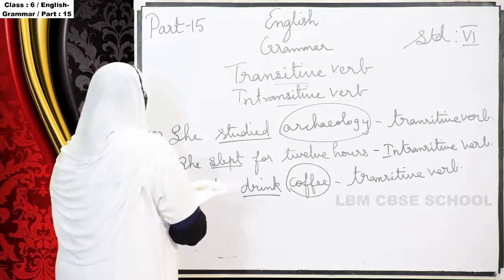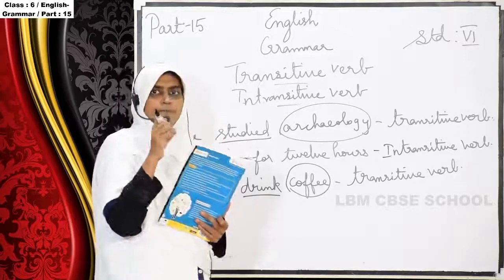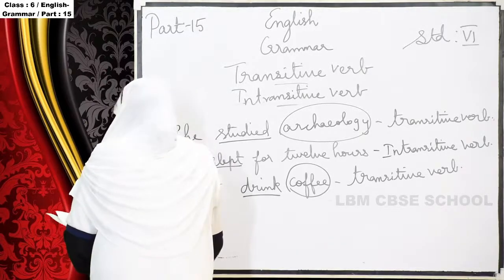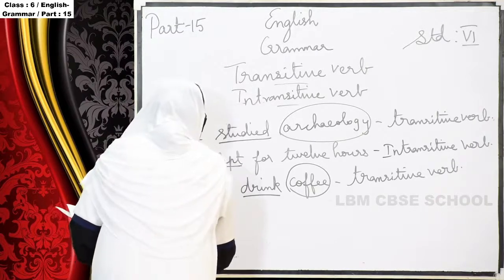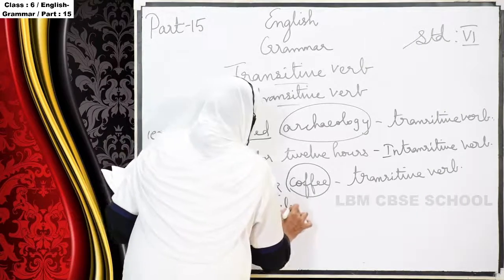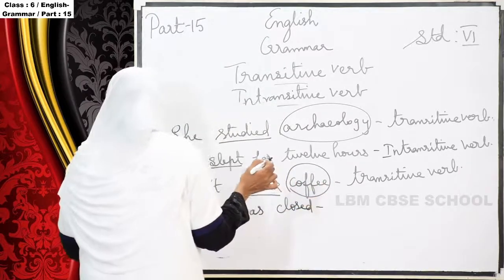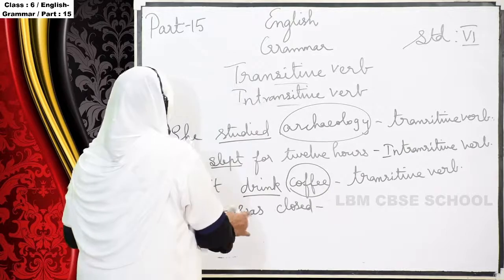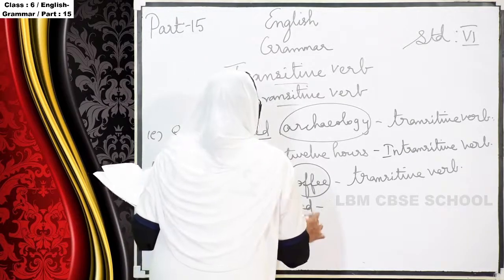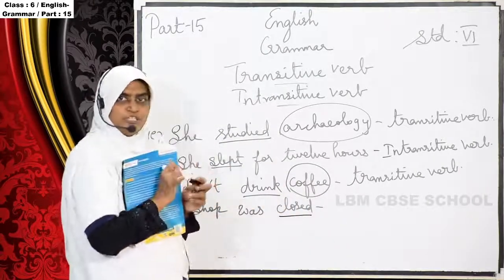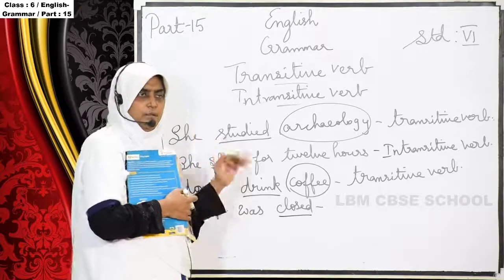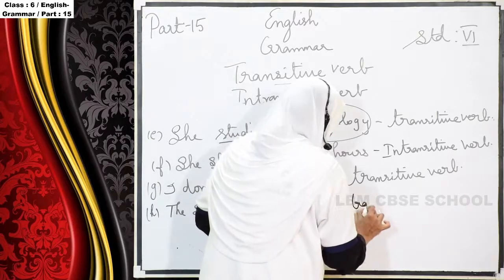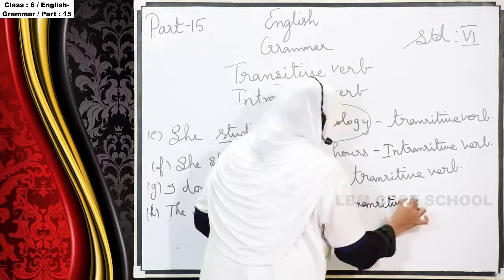One more intransitive verb — H. 'The shop was closed.' Here 'closed' is the verb, but it doesn't take the object. It gives a statement but is not taking any object. So that sentence we call an intransitive verb.